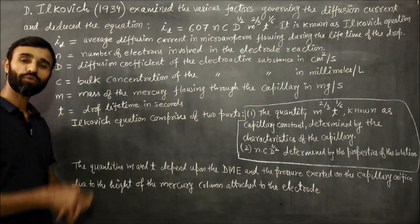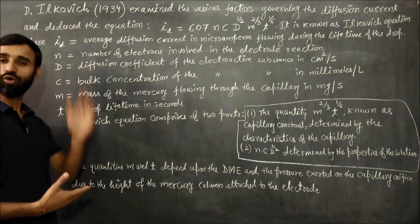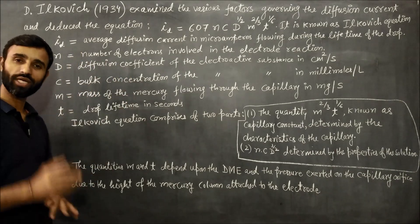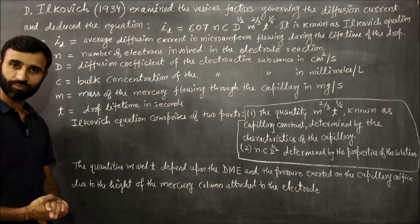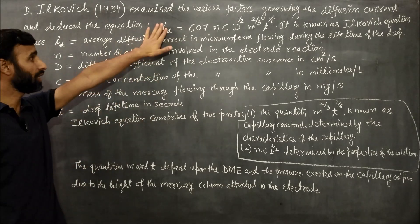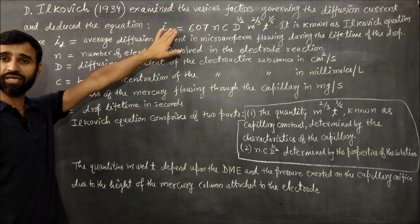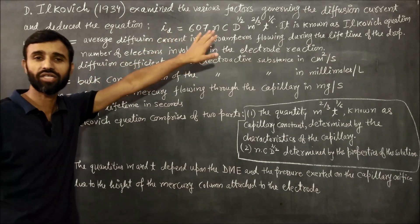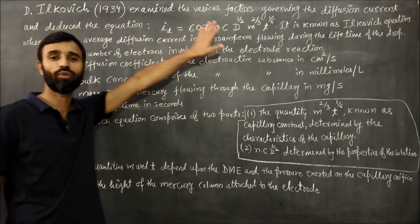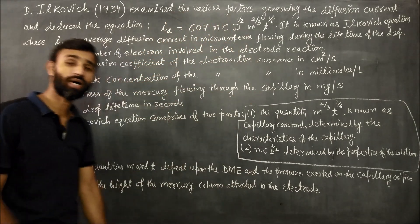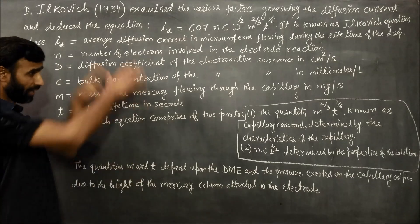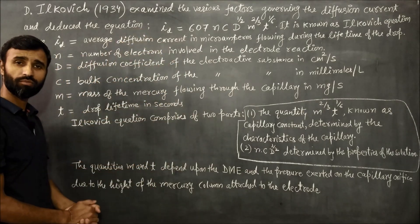Namaskar. Today we will discuss the Ilkovic equation. The Ilkovic equation is used in polarography, and in this equation the relation is: id equals 607 times n times c times d raised to power 1/2, times m raised to power 2/3, and t raised to power 1/6.